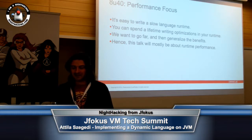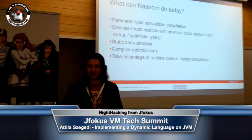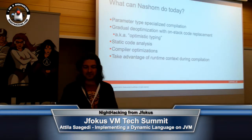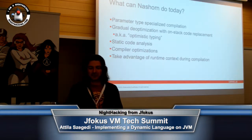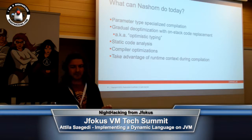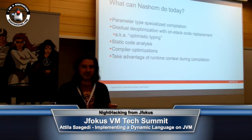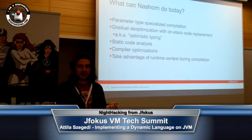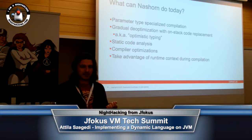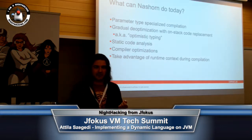I want to talk about various things related to runtime performance. In Nashorn, the tricks that we do for good runtime performance — the biggest thing is what we've already talked about in various other forums — named optimistic typing. But we did actually do a lot of other stuff. There's type specialized compilation, we are doing a lot of static code analysis, we are doing classical compiler optimizations, and we are also doing this thing of taking advantage of runtime context.